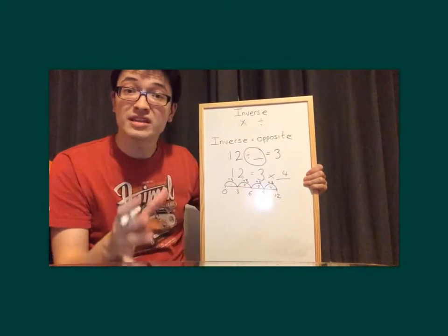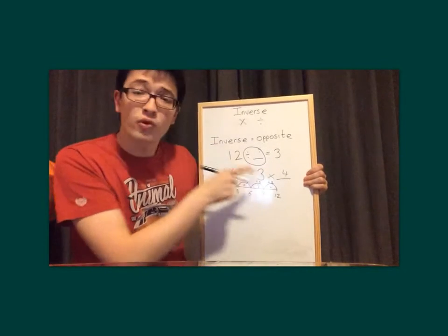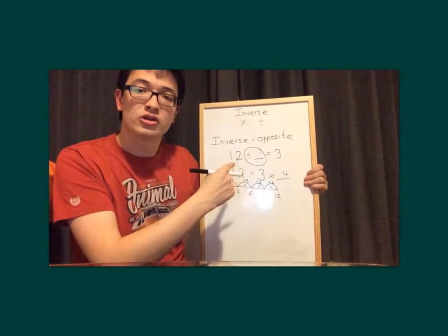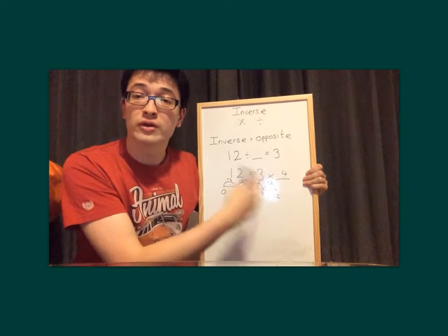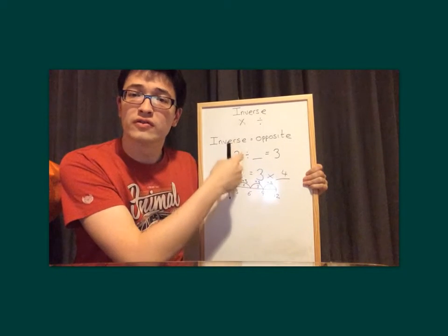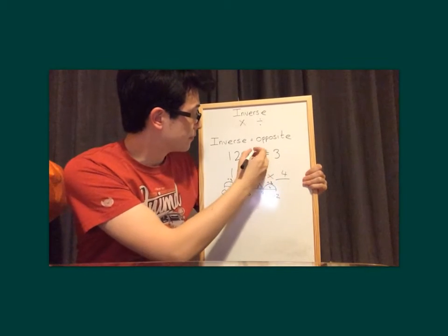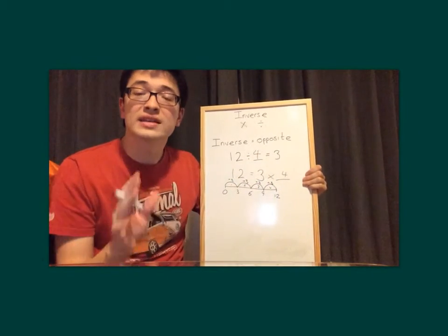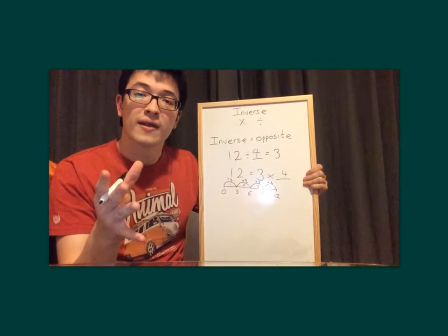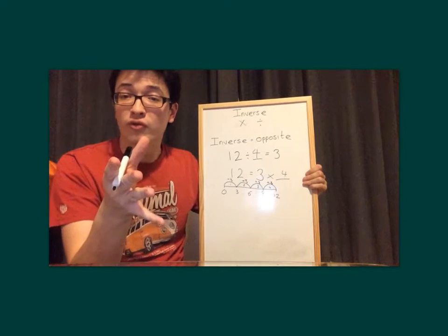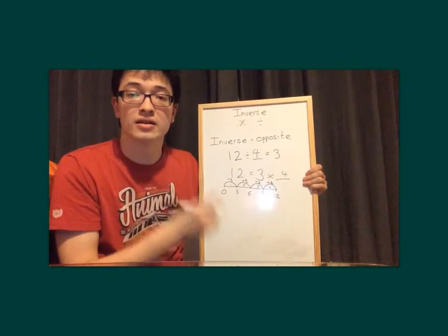So that means 3 times 4 equals 12. If 4 is our missing number, let's go back to the previous question: 3 times 4 equals 12, so 12 divided by 4 equals 3. And that's how you can use inverse operations to check, or to solve, a number sentence with a missing number.